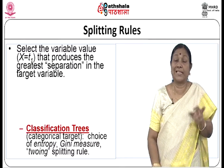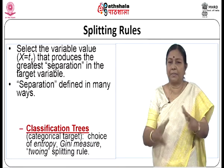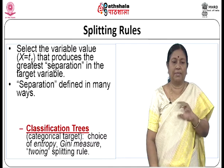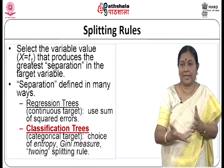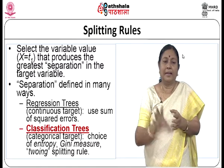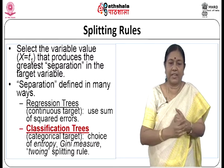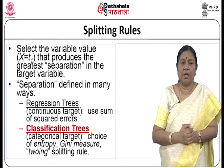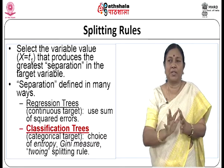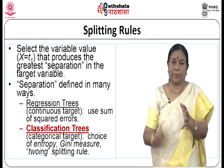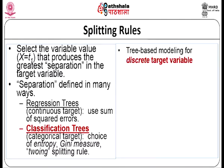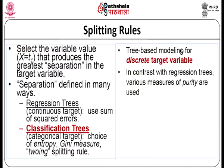Select the variable and value that produces the greatest separation in the target value. Separation can be defined in multiple ways. In a regression tree, use sum of squared errors. In a classification tree with categorical targets, the choice of entropy, Gini measure, or twoing splitting rule is used. For tree-based modelling with discrete target variables, various measures of purity are used — regression trees use only sum of squared errors, while classification trees may use entropy, Gini measure, or the twoing splitting rule.